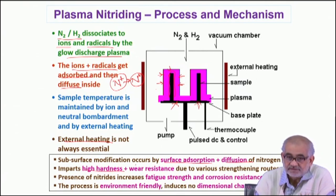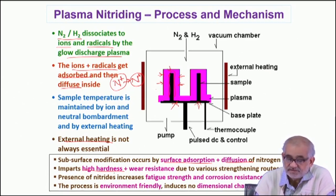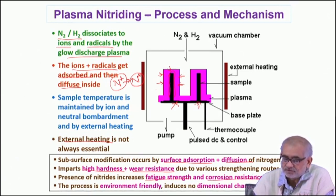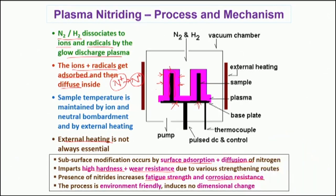This ingress of nitrogen from the atmosphere leads to formation of nitrides and causes increase in hardness and wear resistance. The nitrides also increase fatigue strength and corrosion resistance, as discussed at length in previous lectures, and the process is extremely environment friendly. This is a very important point as to why plasma nitriding is always favored over liquid or gaseous nitriding processes.